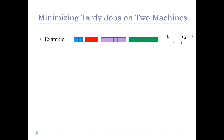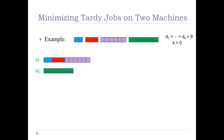As an example, consider four jobs where the processing time of each job is represented by a square. The blue job has a processing time of two and the purple job has a processing time of six. All four jobs have the same due date, which is nine, and we're looking for a schedule with no tardy jobs. One possible schedule assigns the blue, red, and purple jobs to one machine and the green job to the other.